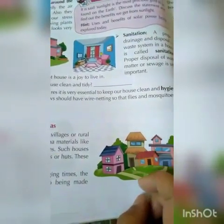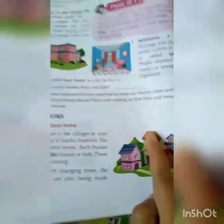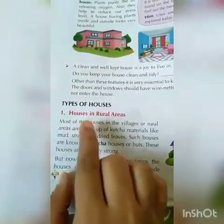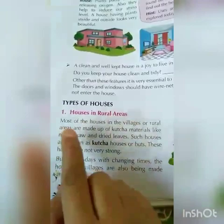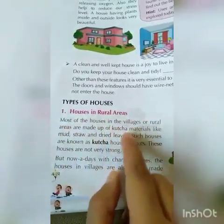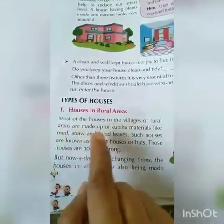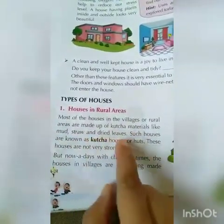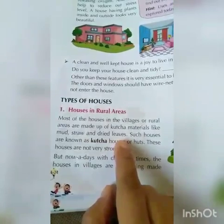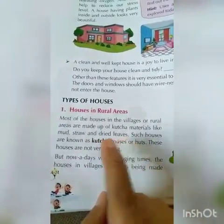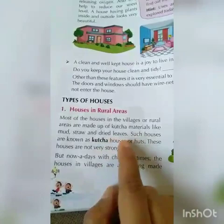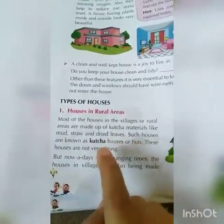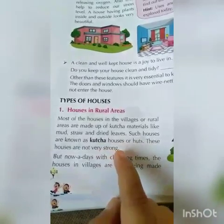This is the Kaccha house made up of straw. Houses in rural areas — most of the houses in the villages or rural areas are made up of Kaccha materials like mud, straw, and dried leaves. Such houses are known as Kaccha houses or herds. These houses are not very strong.